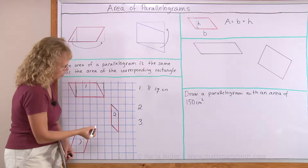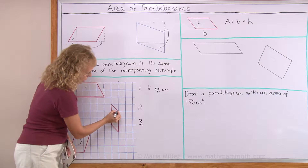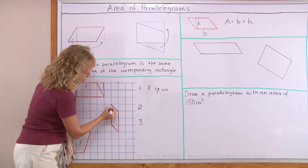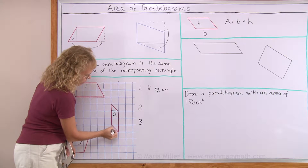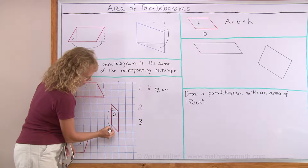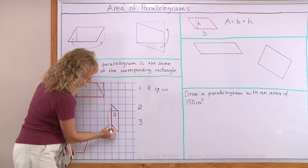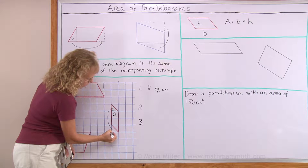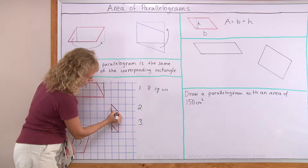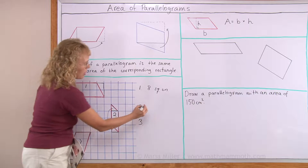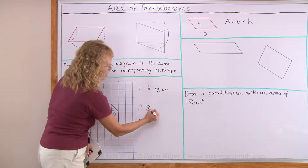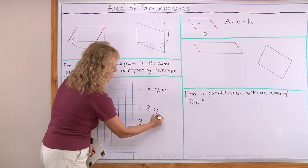Over here, number two. Here's a little triangle that I will cut off and move over there. And then I will get the rectangle three units this way and one unit that way. So it is three square units.